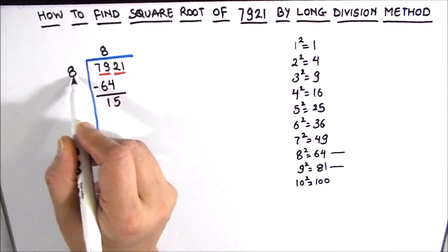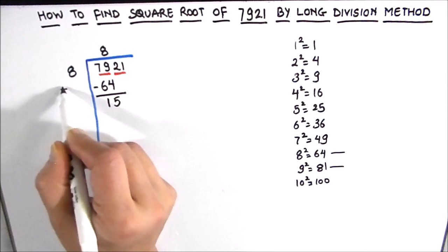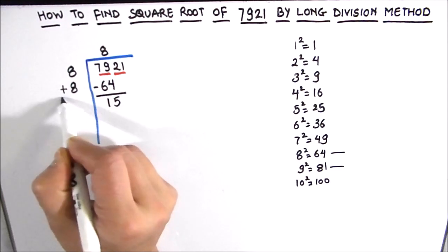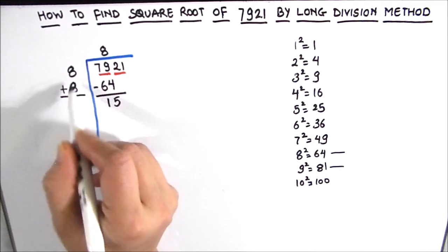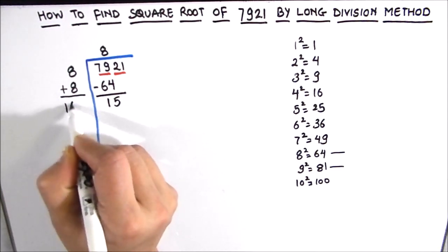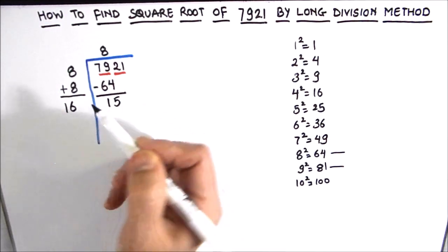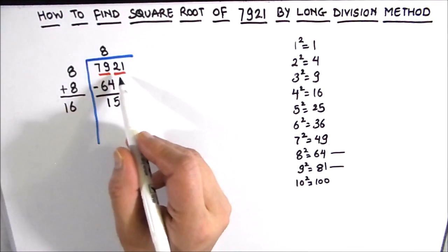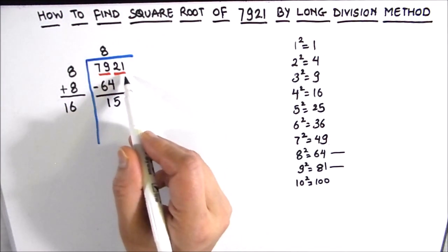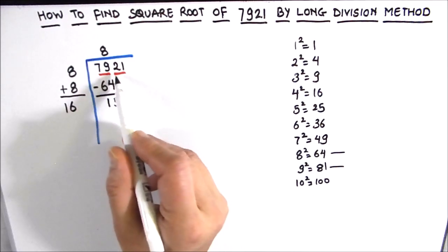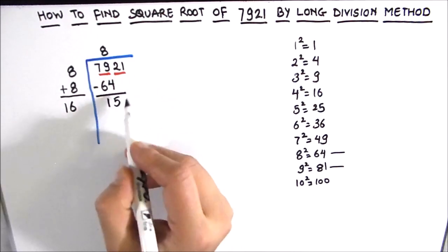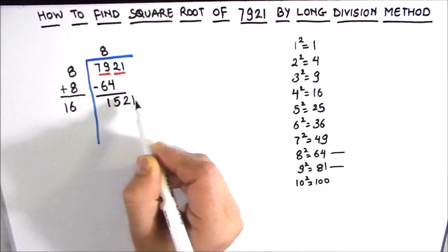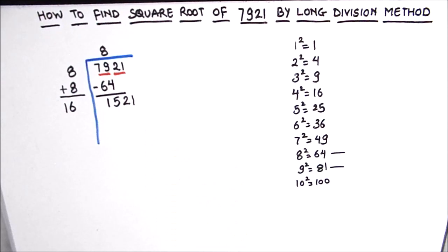We have 8 as our divisor, so we add 8 to get the digits of the new divisor, which is 16. Next, we drop down the next pair of numbers, which is 21. So our new dividend is 1521.